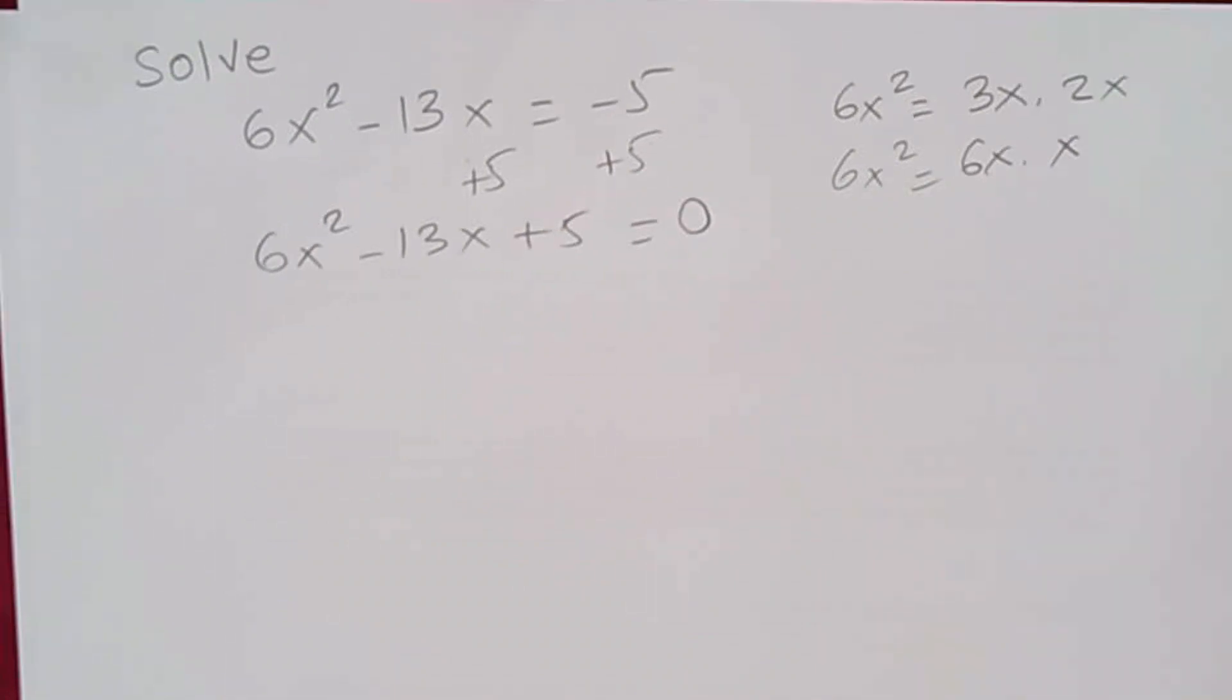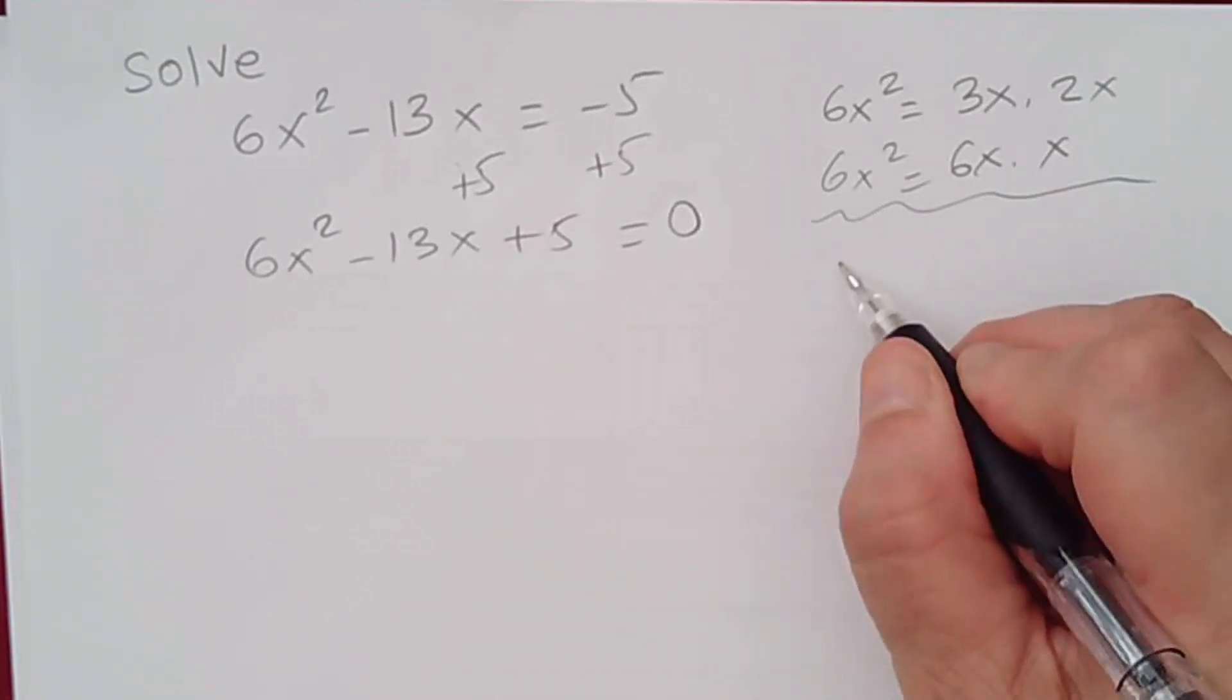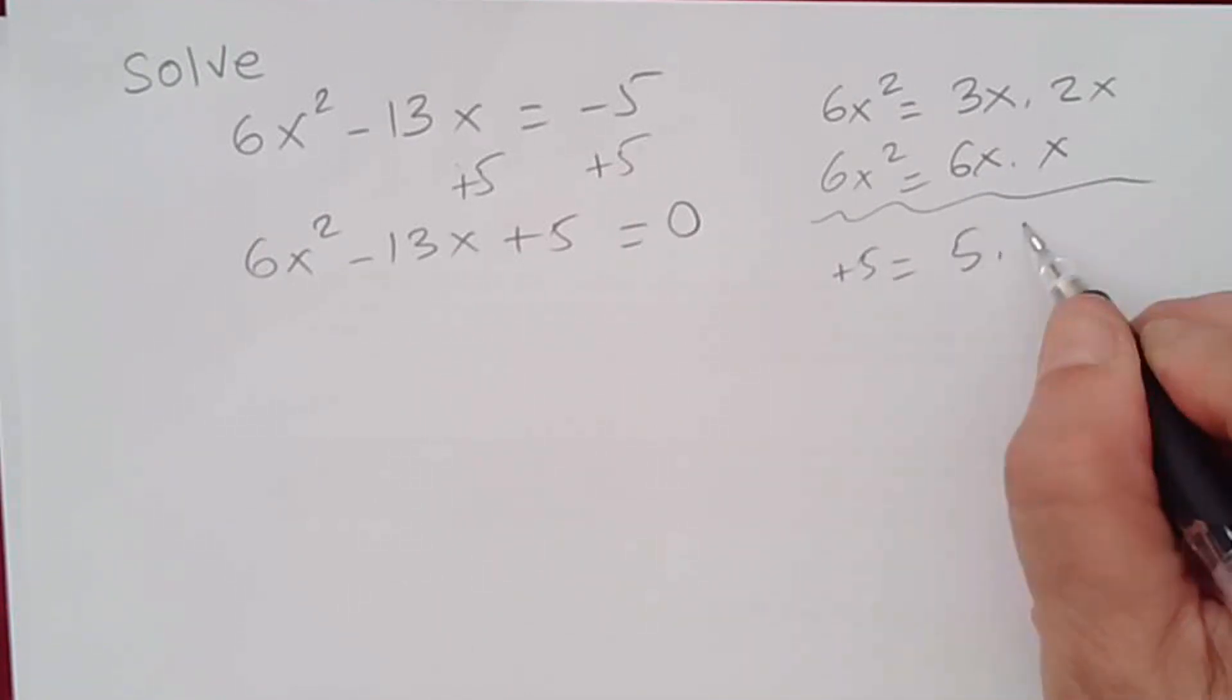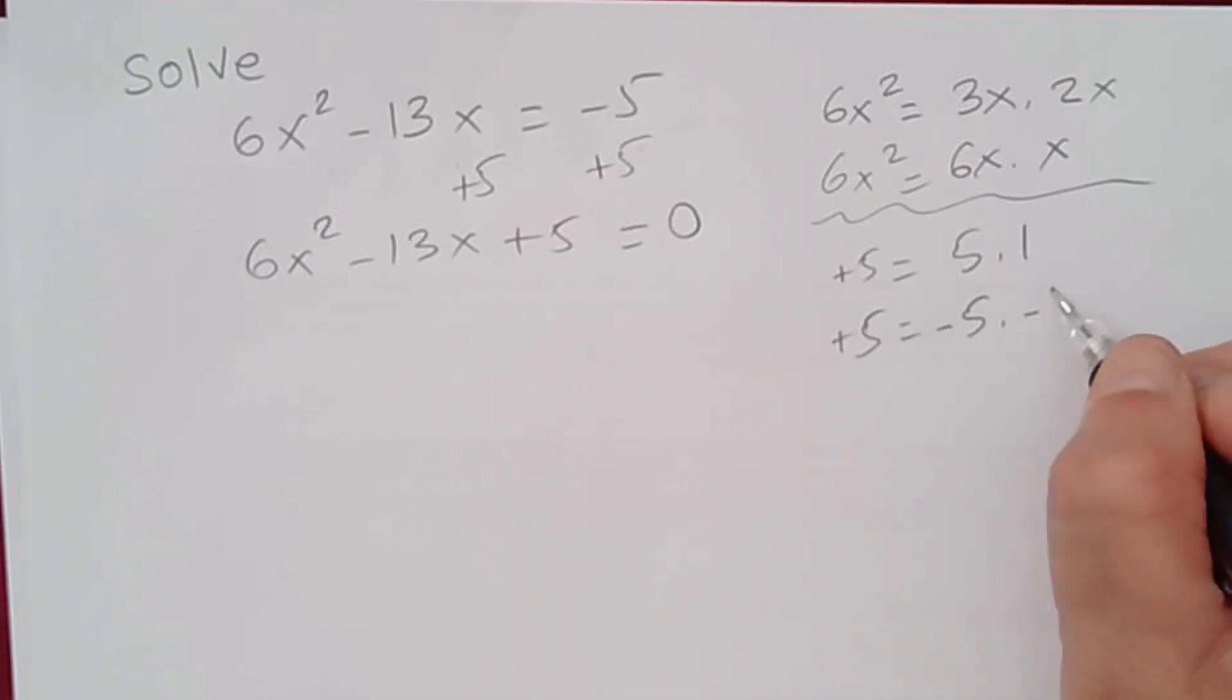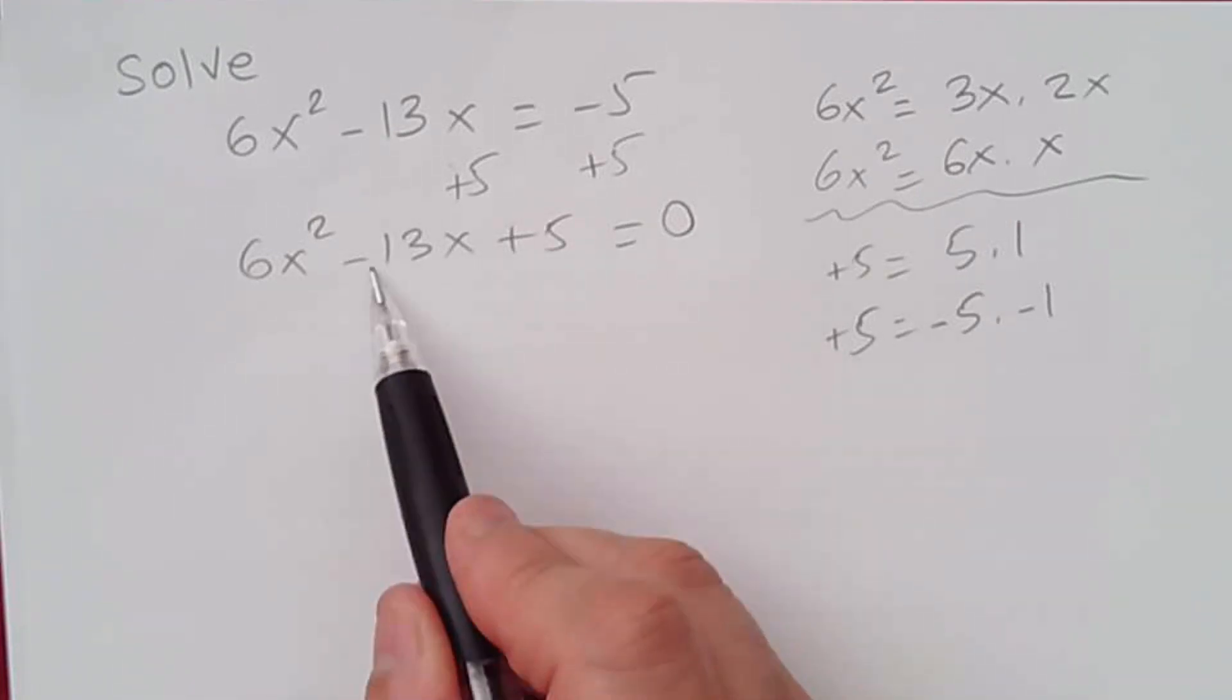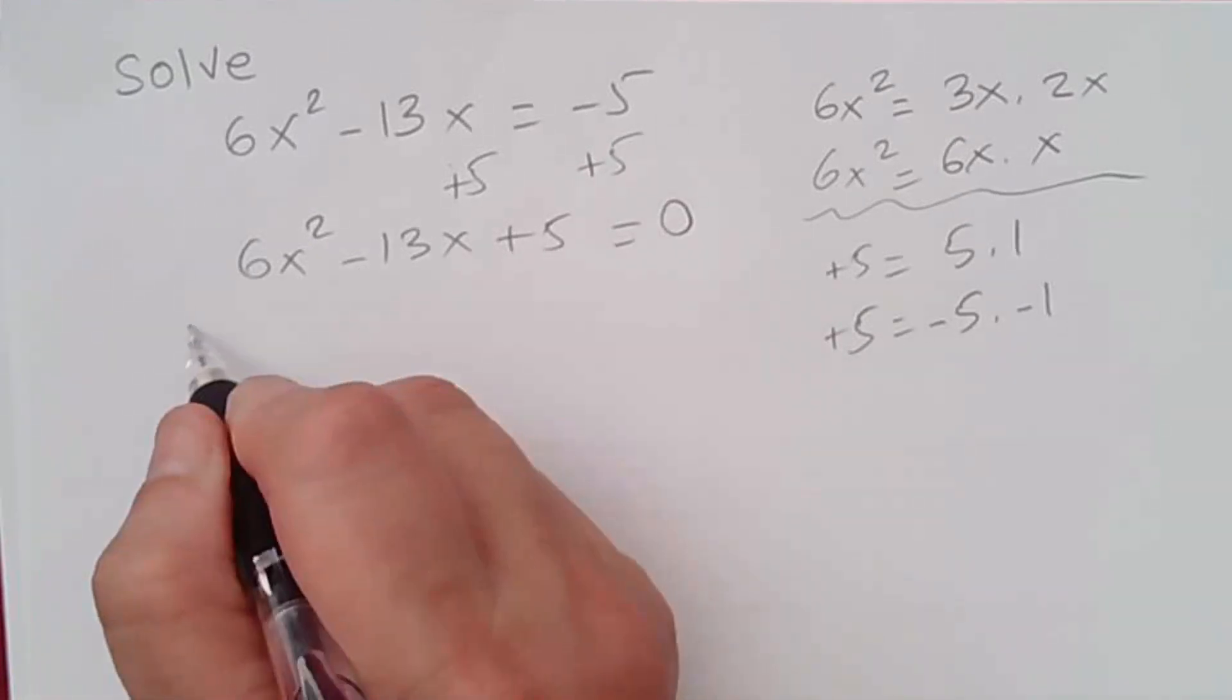Let's see which one will be the correct factoring. And now we have 5 or positive 5. We can get 5 by multiplying 5 times 1 or in this case, I believe we're going to have negative 5 times negative 1. So both of them would be negative. The reason why I think both of them are negative is because the middle term is negative. So let's go ahead and try to factor it.